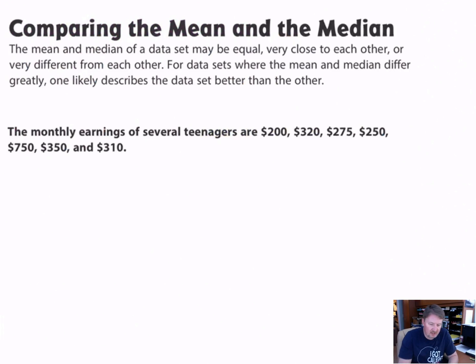Last one: comparing the mean and the median. The mean and median of a data set may be equal, very close to each other, or very different from each other. For data sets where the mean and median differ greatly, one likely describes the data set better than the other. Here's an example: the monthly earnings of several teenagers are $200, $320, $275, $250, $750, $350, and $310.